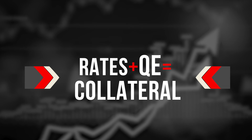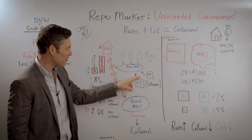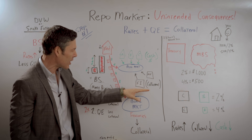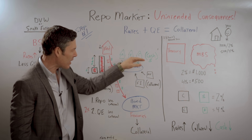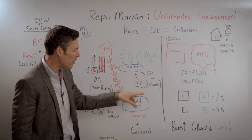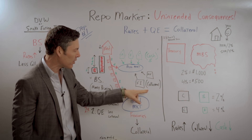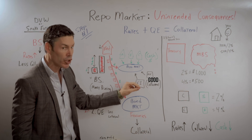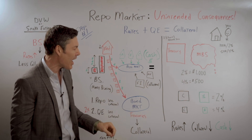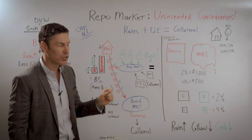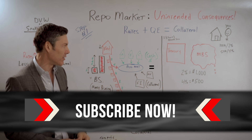Step number one: rates plus quantitative easing equals collateral. The financial institutions and hedge funds take that collateral, they put it into the repo market — that's where they get that cash. So the amount of collateral, good collateral, is equivalent to the amount of cash that's actually available in the system.